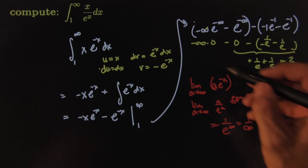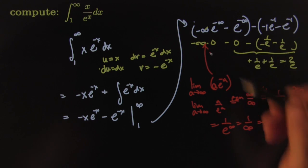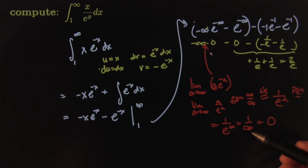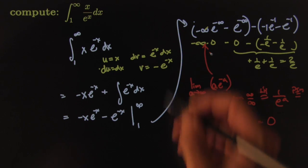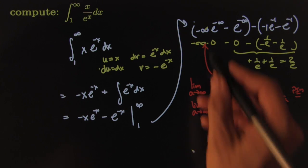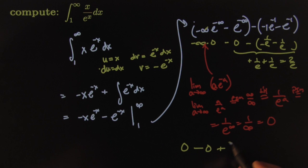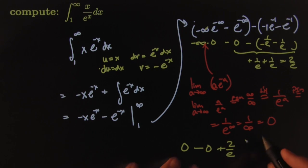So I was able to resolve this guy right here. All that work was just to try to figure out what that piece was. And now I've got it. Now I'm going to put it all together in yellow. So I have 0 minus 0 plus 2 over e for a grand total of 2 over e.